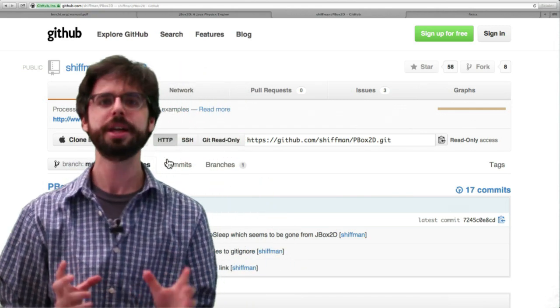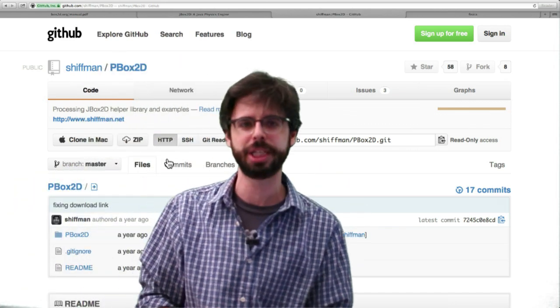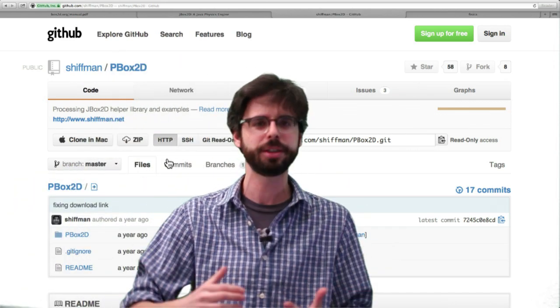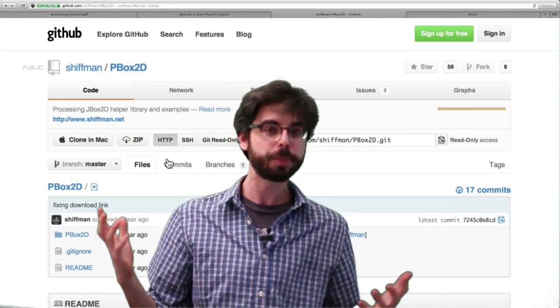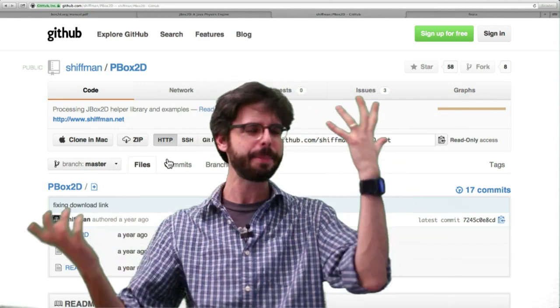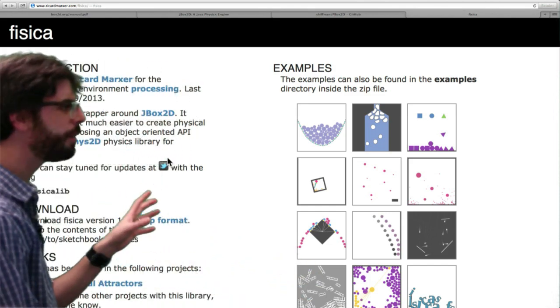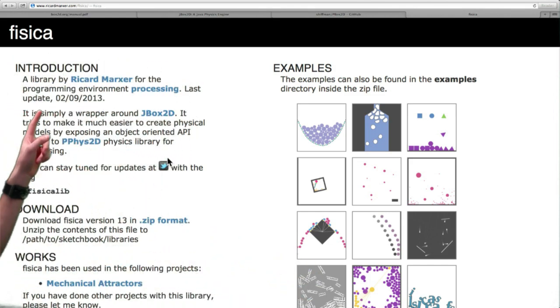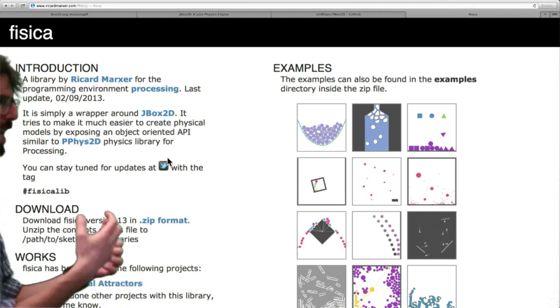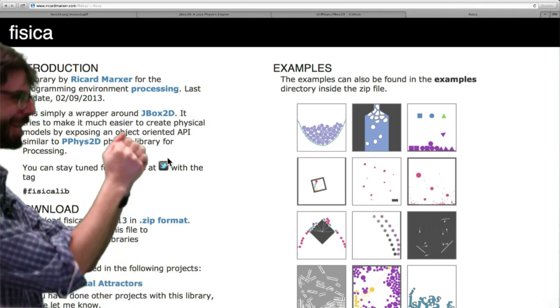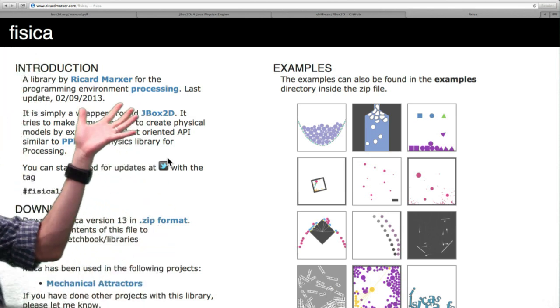Now I should mention that this is not the only way to use Box2D in processing. In fact, there are other libraries. If you go to the processing libraries page, you'll see a few, BoxRap2D I think one is called. But one that I wanted to point out, which I think is particularly wonderful, is called Physica, which is, I don't know if I'm pronouncing that right, I say it with enthusiasm though, Physica, which is by Richard Markser. And this I think is terrific.